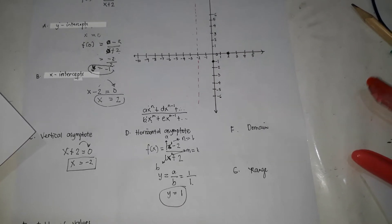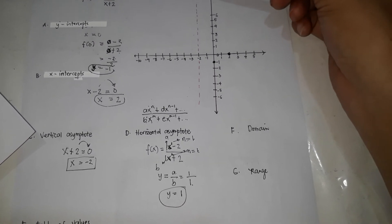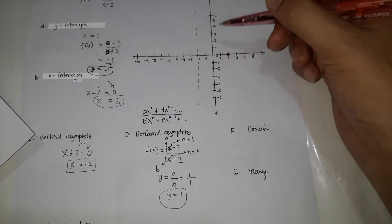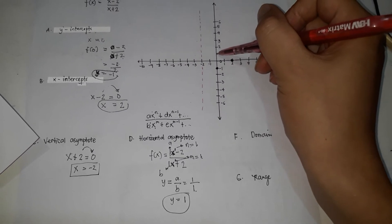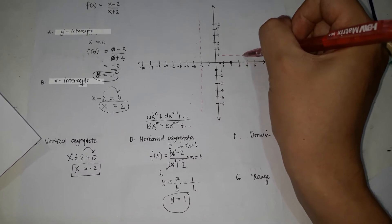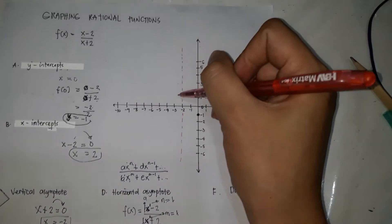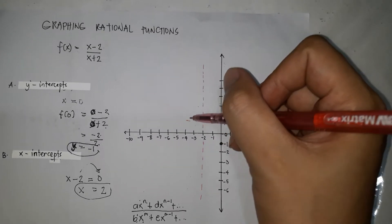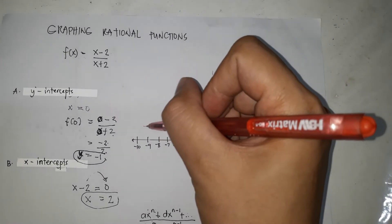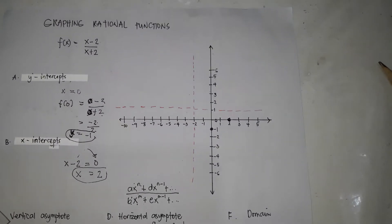So y equals 1 is the horizontal asymptote. Find 1 on the y-axis and draw a horizontal line through it. That is our horizontal asymptote.